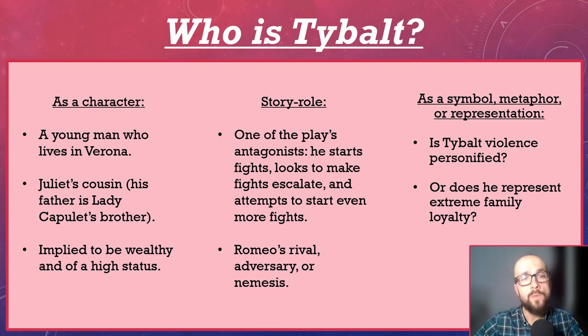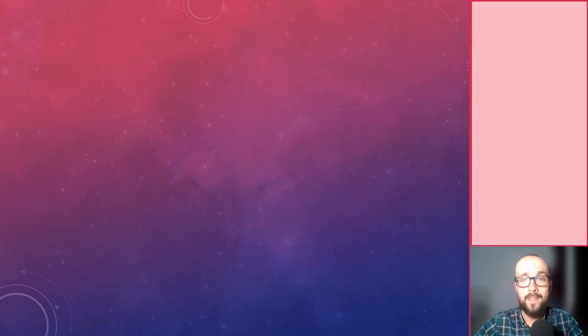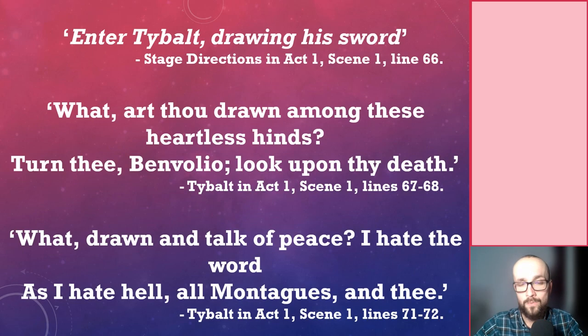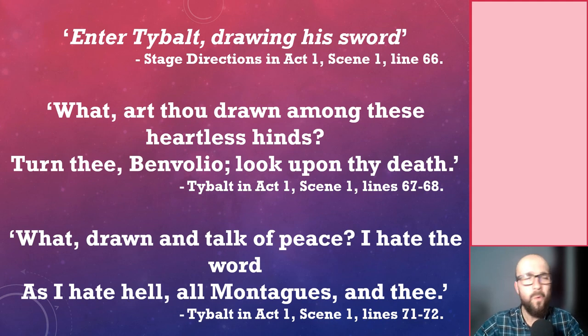But which quotations could you analyse if asked to write about Tybalt? Let's begin right at the start of the play and consider how Tybalt is presented there, focusing on three quotations. They are: the stage direction 'Enter Tybalt, drawing his sword'; 'What, art thou drawn among these heartless hinds? Turn thee, Benvolio, look upon thy death'; and 'What, drawn and talk of peace? I hate the word, as I hate hell, all Montagues, and thee.'